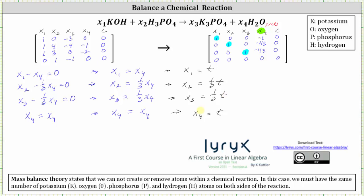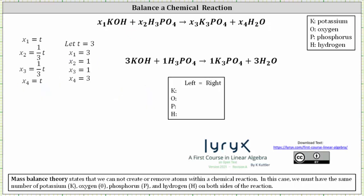These equations must be true for the chemical reaction to be balanced. Let's look at one example using the parameterized equations. Let T equal three. Then x sub one is three, x sub two is one, x sub three is one, and x sub four is three. Substituting these values back into the chemical reaction gives a balanced reaction. Let's verify by checking the number of atoms of potassium, oxygen, phosphorus, and hydrogen.